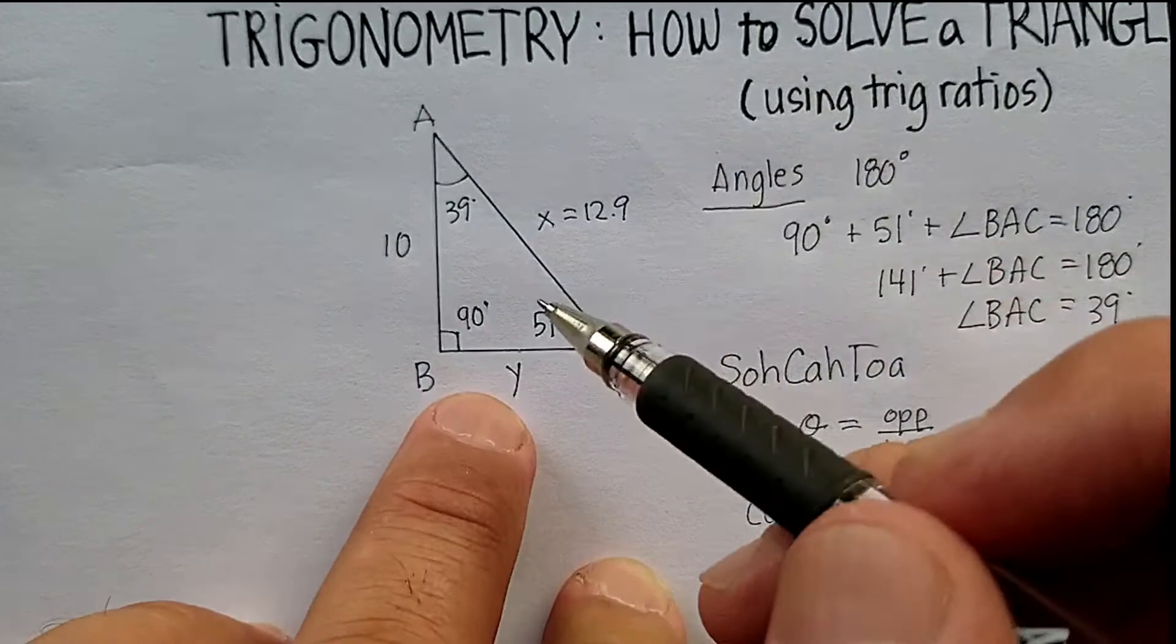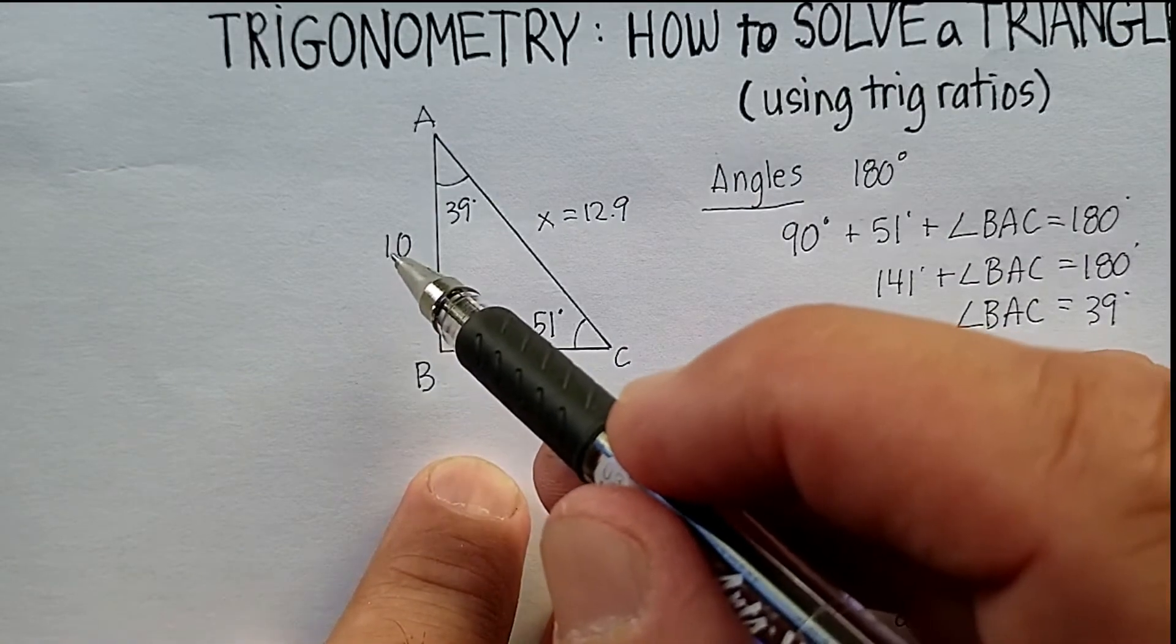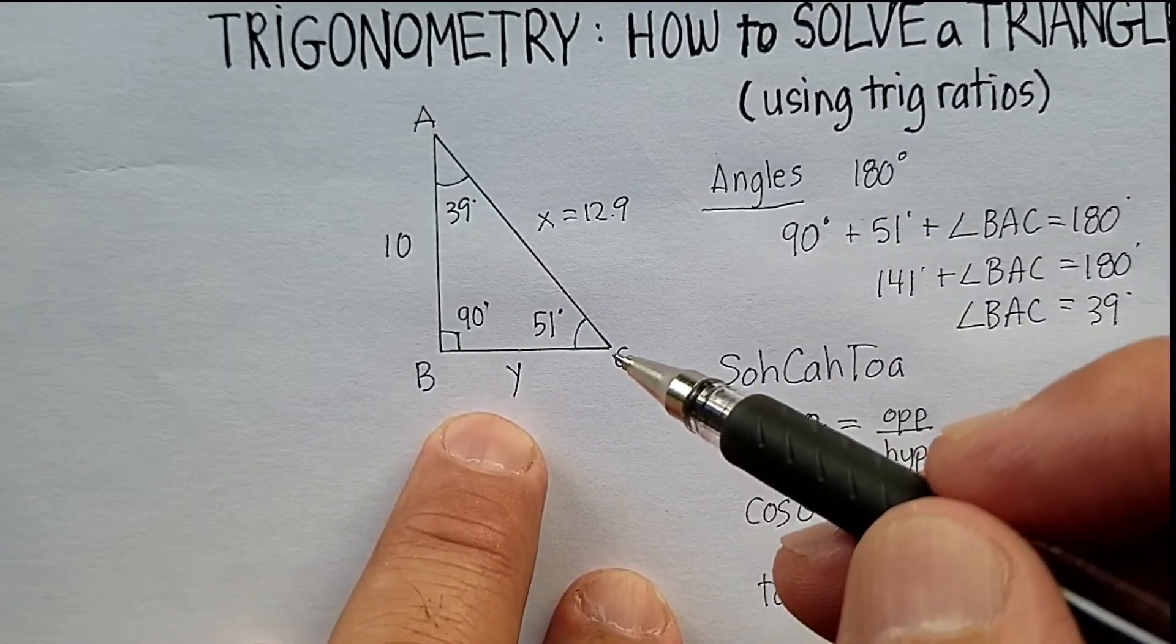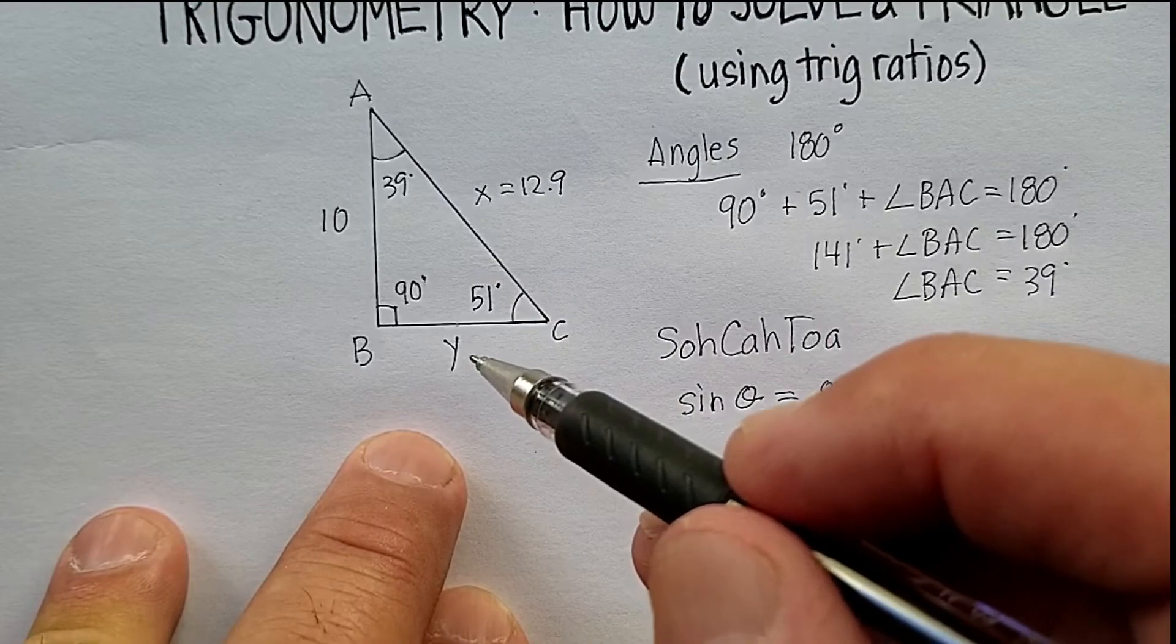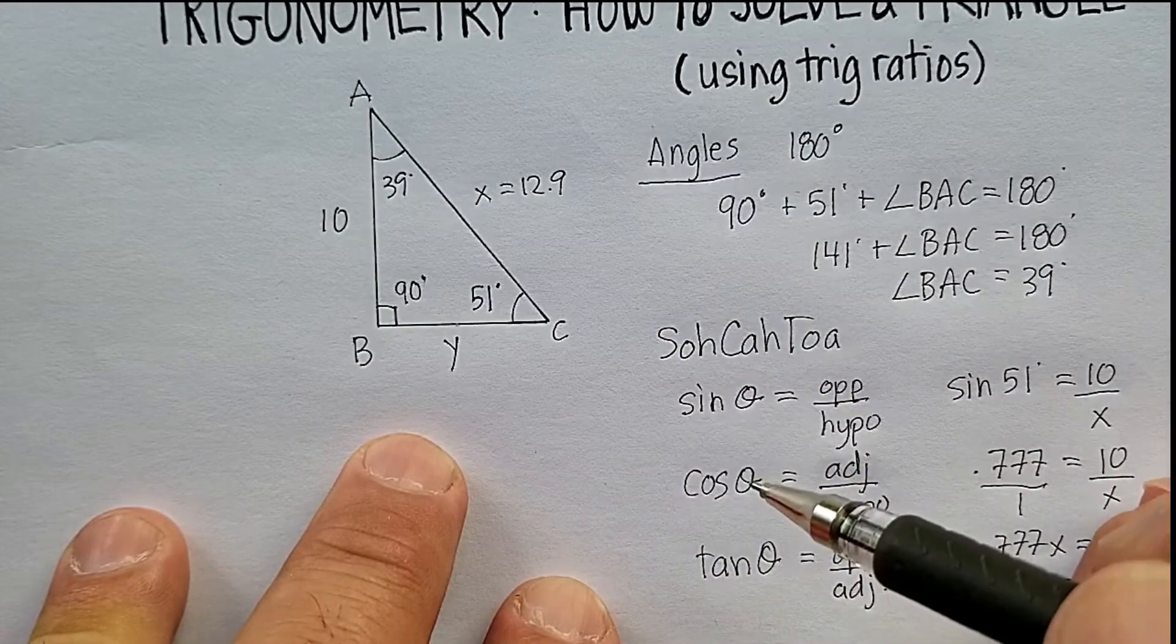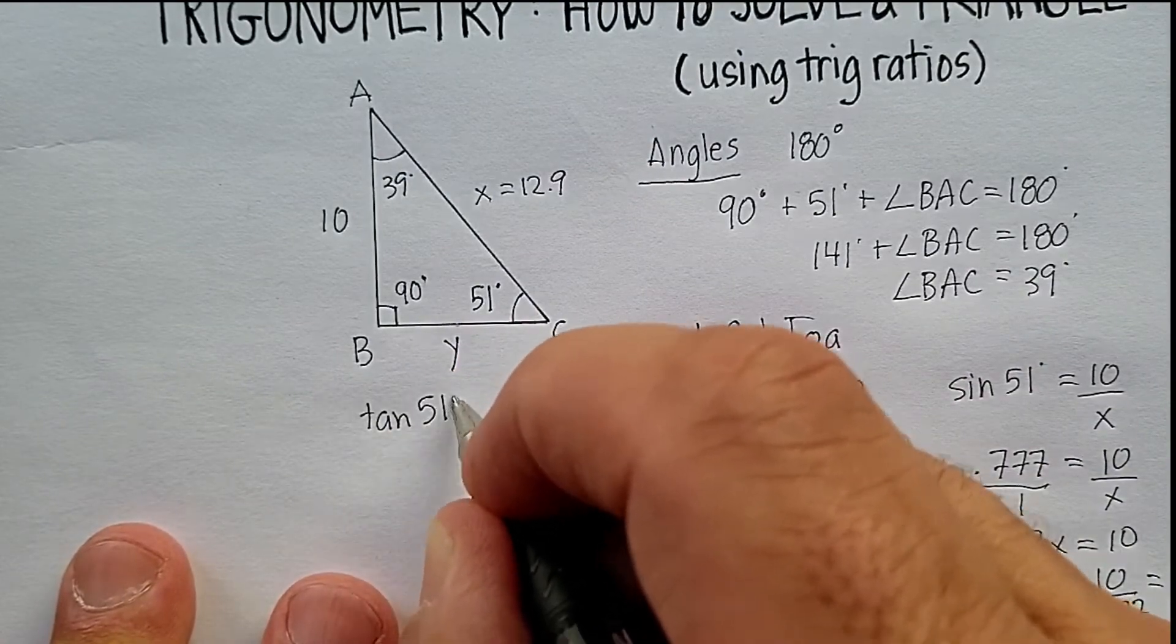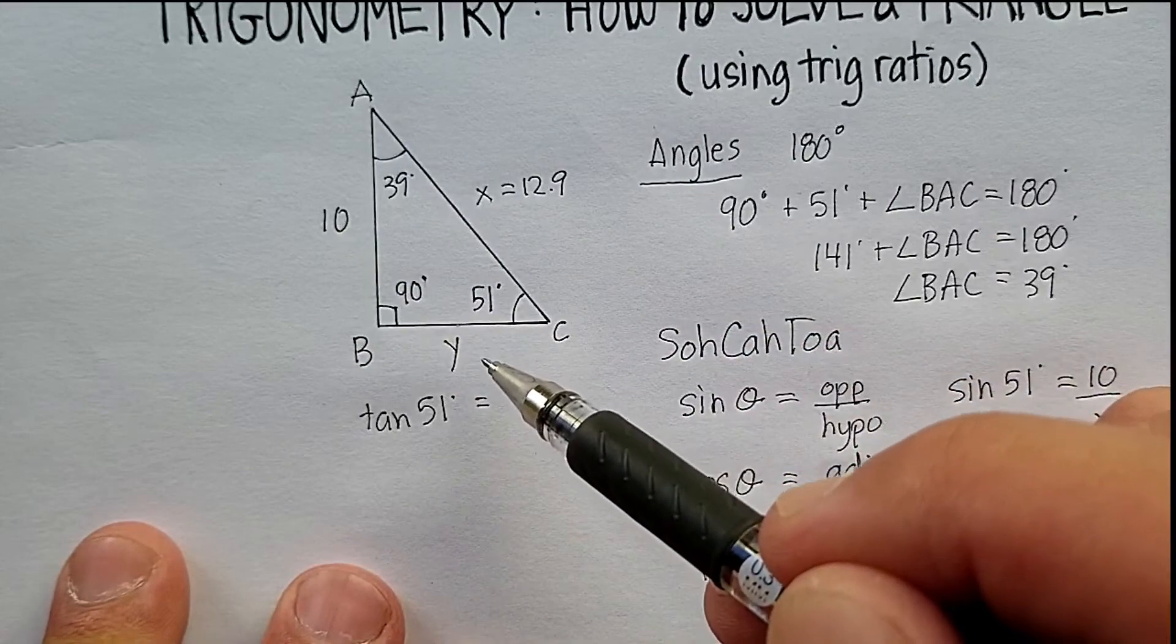All right. So, now look what we have. We have basically two sides of a right triangle. We could use the Pythagorean theorem, and we could say that 10 squared plus y squared will equal the hypotenuse squared, which we just figured out. Or we can actually just use another trig function to find y. So, let's do that, just because we're practicing our trig functions. We're going to use 51 degrees again, but we want to find y this time. Since we want this to be in our equation, let's just use tangent.